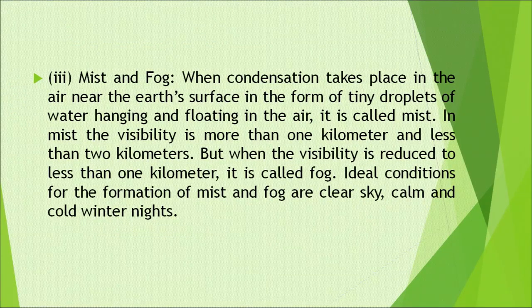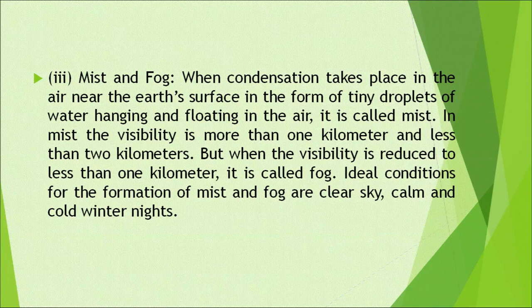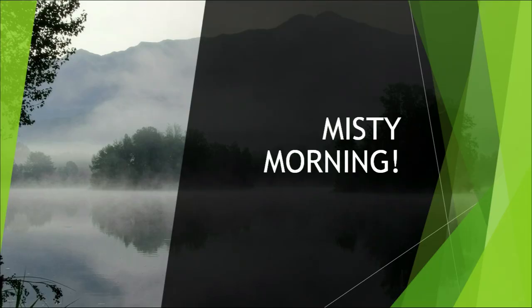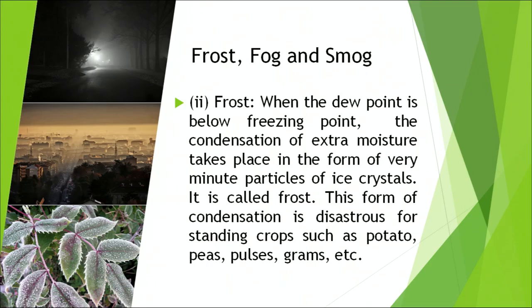When condensation takes place in the air near the earth's surface in the form of tiny droplets of water hanging and floating in air, it is called mist. In mist, visibility is more than one kilometre and less than two kilometres. When visibility is reduced to less than one kilometre, it is called fog. Ideal conditions for mist and fog are clear sky and calm, cold winter nights. Smog is fog that has been polluted and discoloured by smoke, dust, carbon monoxide, sulfur dioxide and other fumes. Smog frequently occurs in large cities and industrial centres and causes respiratory illnesses. These pictures depict a misty morning and all three condensation forms: frost, smog, and fog.